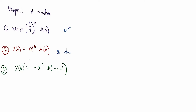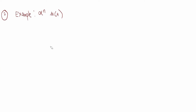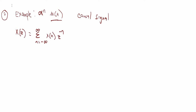So without further ado, let's begin. This is a causal signal because of this. It's the same as example number one, except that we have this alpha as a value here. So let's start by writing out the formula for the Z-transform.